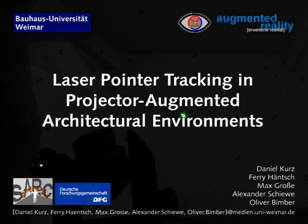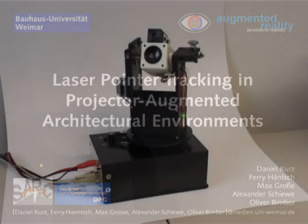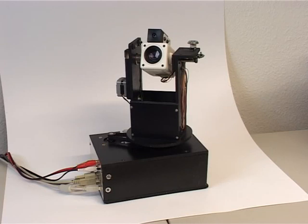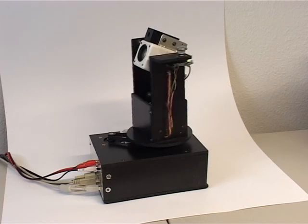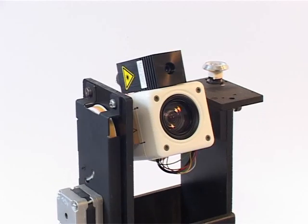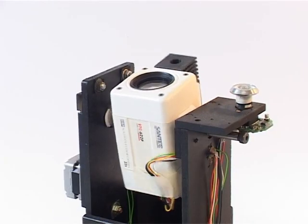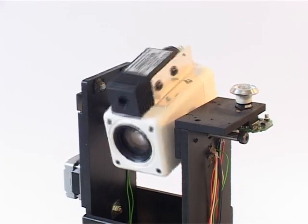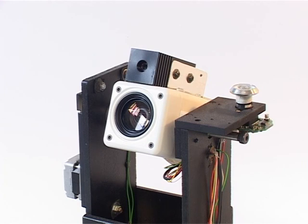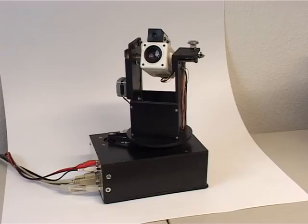We present a system that applies a custom-built pan-tilt-zoom camera for laser pointer tracking in arbitrary real environments. Our prototype consists of two video cameras: a low-resolution wide-angle context camera and a high-resolution pan-tilt-zoom detail camera. A microcontroller and two stepper motors with their controllers are applied for rotating the detail camera and an attached laser module. Both cameras are directly connected to a PC that analyzes their video images and controls motors, camera settings, and a laser module over the microcontroller.